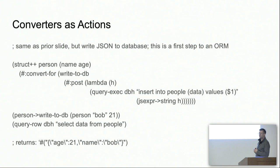This would be a first step toward an object-relational mapper, and access wrappers would also be a good place to go with this, whether you want an ORM or not.